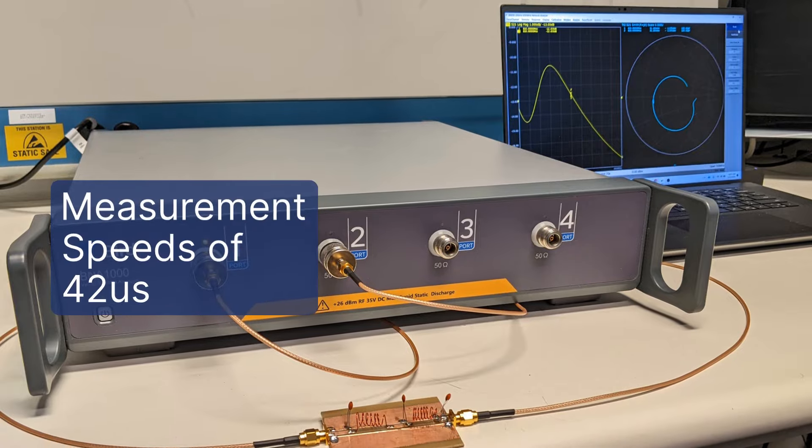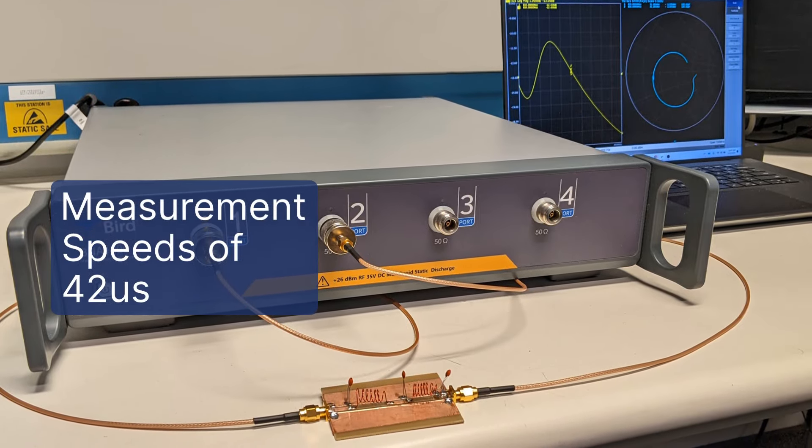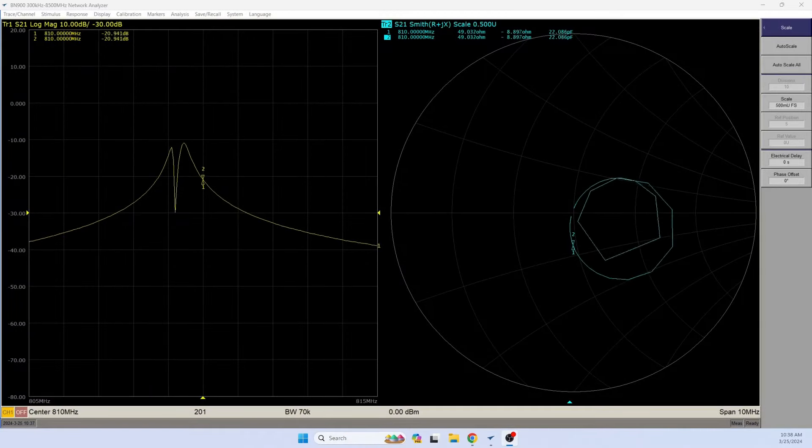Measurement speeds of 42 microseconds per point is ideal for advanced manufacturing floors to sophisticated RF engineering labs so that environmental and situational variables won't affect the measurement.